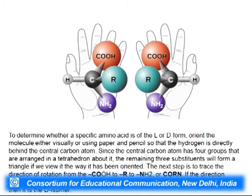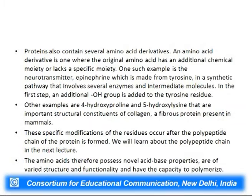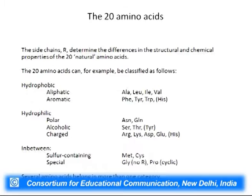To determine the L and D form: if we keep the C-alpha H bond in the plane of paper and search clockwise or anticlockwise for the sequence COOH, then R, then N — if we get the acronym CORN in the anticlockwise direction it will be the L isomer; if it is in the clockwise direction it will be the D isomer. Amino acids have mirror-image L and D forms and these are non-superimposable.